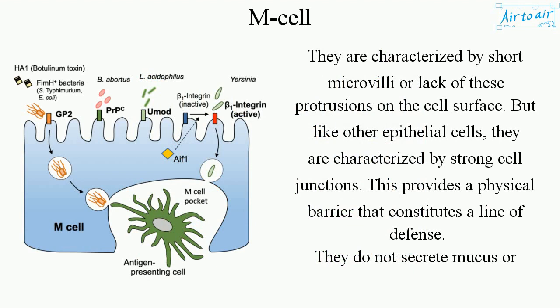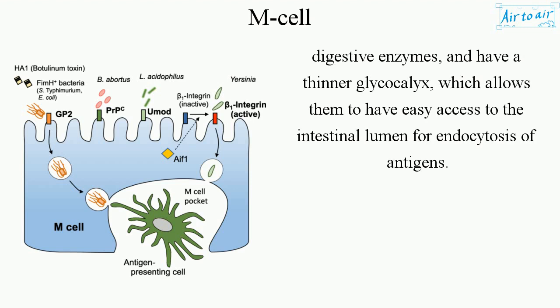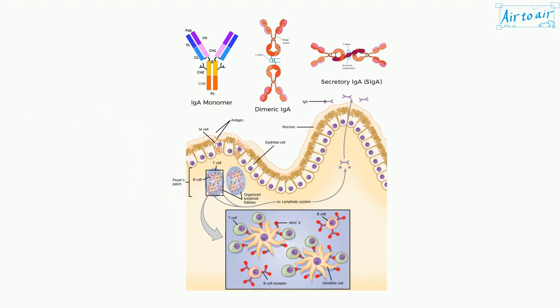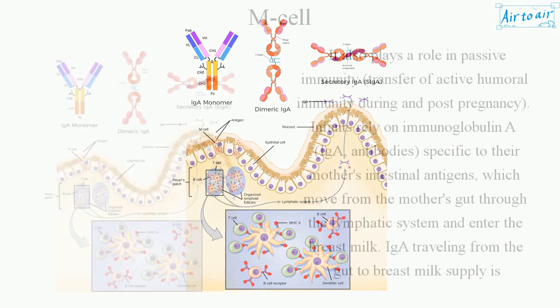Like other epithelial cells, they are characterized by strong cell junctions, which provide a physical barrier constituting a line of defense. They do not secrete mucus or digestive enzymes, and have a thinner glycocalyx, which allows them easy access to the intestinal lumen for endocytosis of antigens.